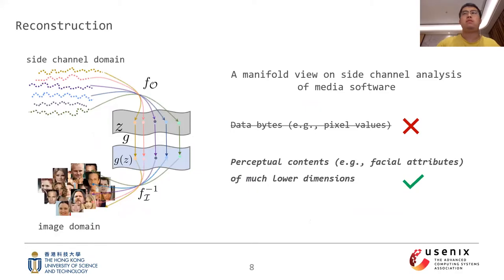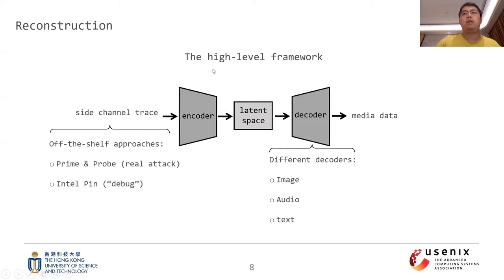Now let's rethink side-channel analysis of media software under the view of manifold. In fact, reconstructing media data from side channels can be viewed as a domain transformation from the side-channel domain to the media data domain. Unlike conventional attacks that recover data bytes, we focus on perceptual contents of media data, which can be represented using much lower dimensions. More specifically, we first encode the privacy from the side-channel trace into a latent representation, and then decode this latent representation as one media data instance. The high-level overview of our framework has two components: an encoder and a decoder.